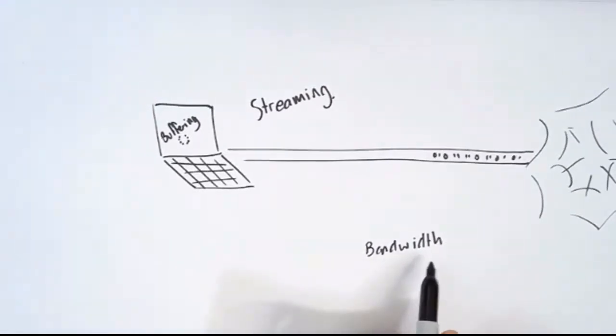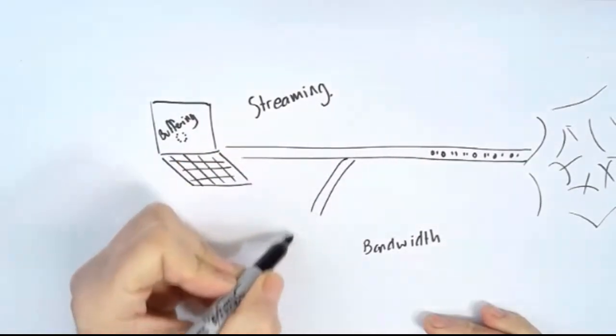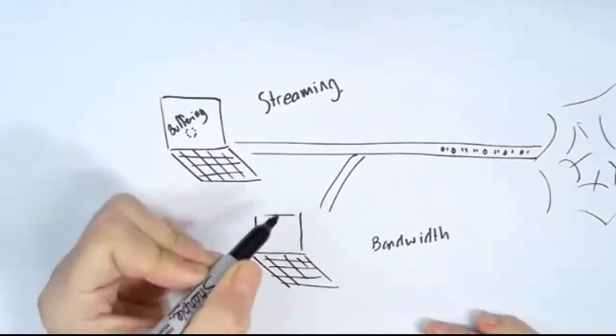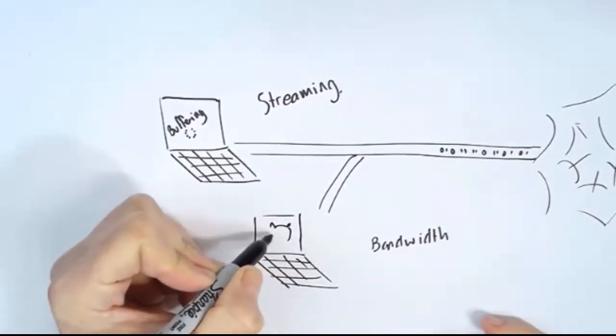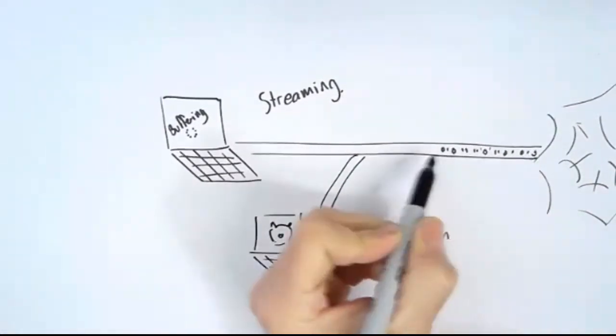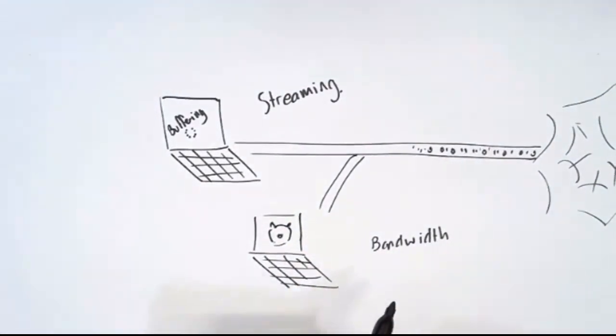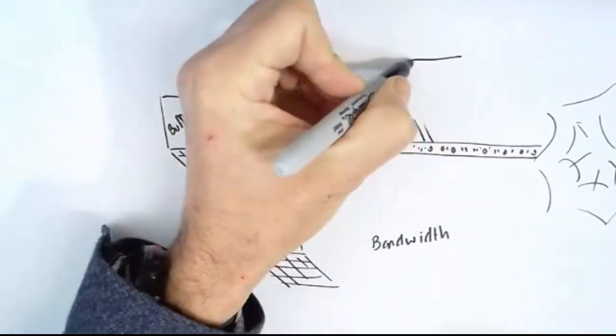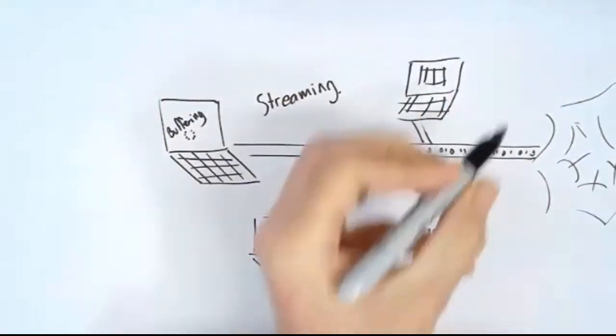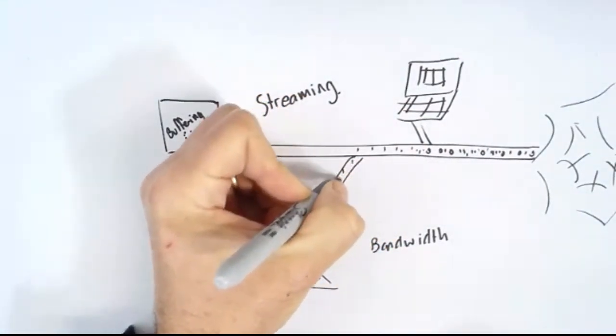Now what happens if your little brother is in the next room and he is downloading delightful cat videos on his computer? That's going to make a contribution as well to the amount of ones and zeros, or the amount of data, that's going through your limited size pipe. What happens if your dad is in his study doing something with boring old Excel spreadsheets? At the same time, again, that's more of a contribution of data that is clogging up this bandwidth.